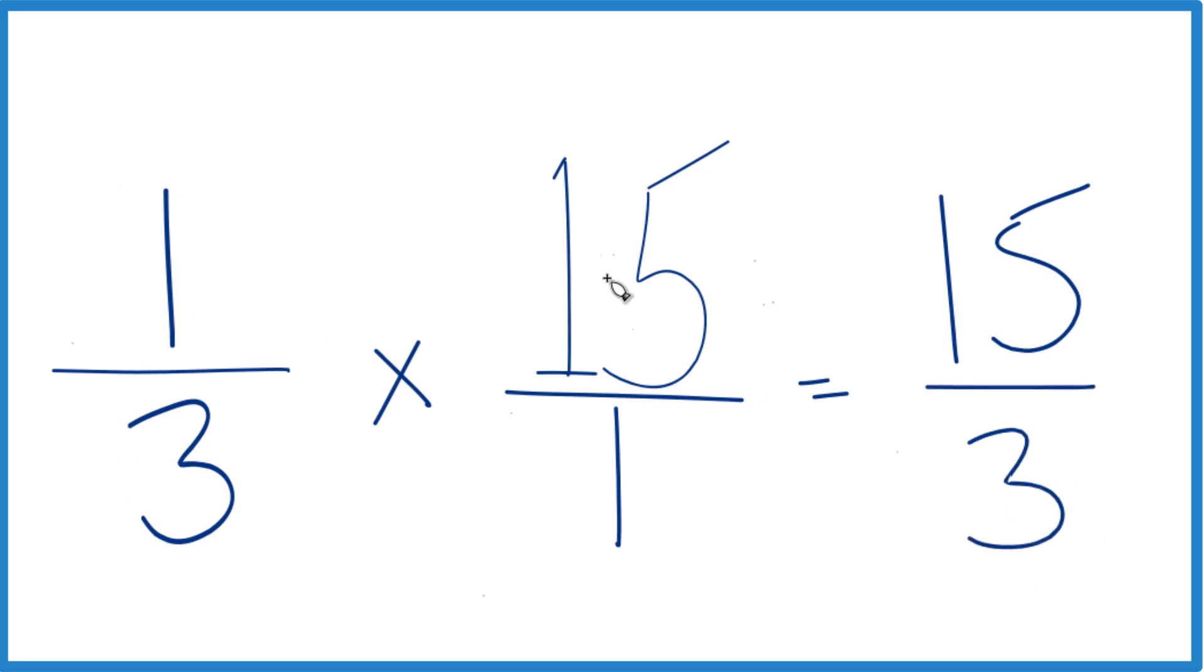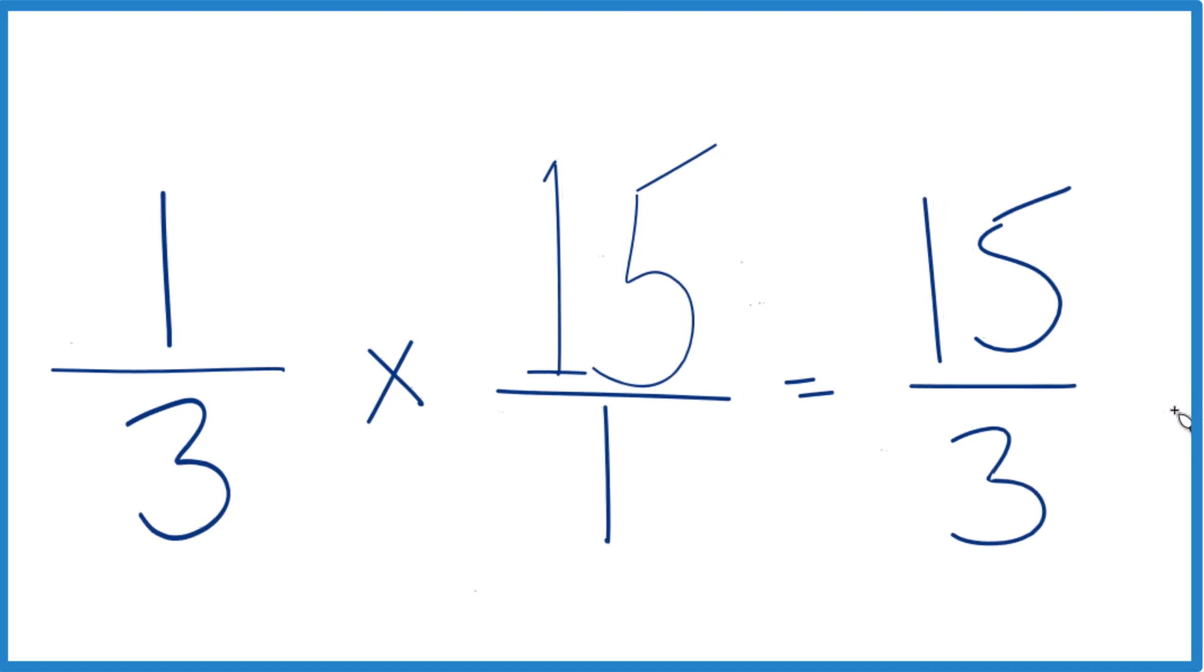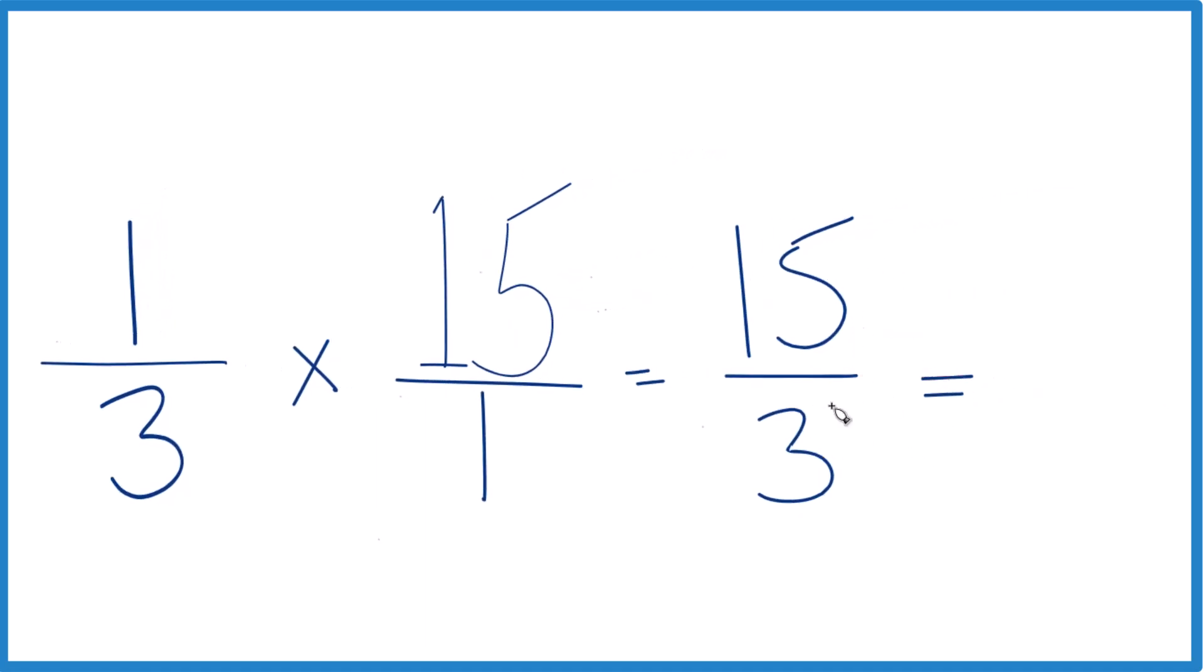So we end up with one-third times 15, or one-third of 15, equals 15 thirds. We can simplify this further because 3 goes into 15 five times. 5 times 3 is 15. So one-third of 15, that is 5.